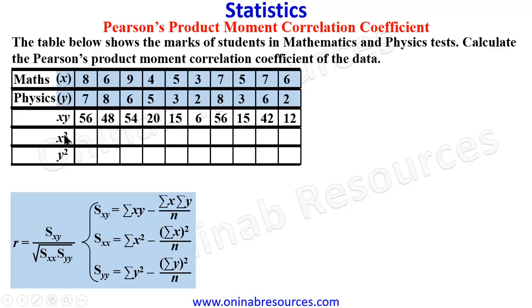Then we go for X squared. X squared, this is 64. 6 squared, 36. 9 squared, 81, 16, 25, 9, 49, 25, 49, and 36.